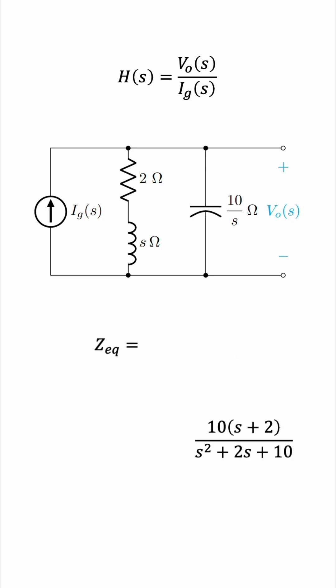So this is the equivalent impedance of the circuit, and we can redraw the circuit like this.